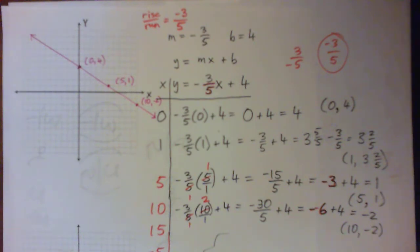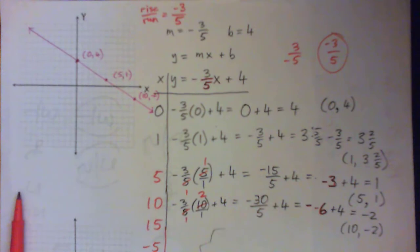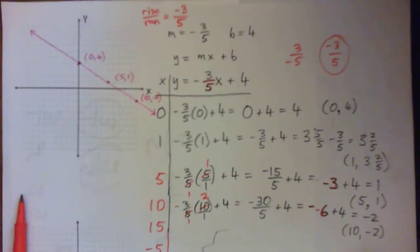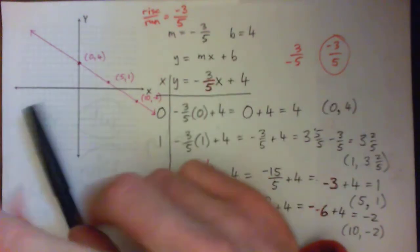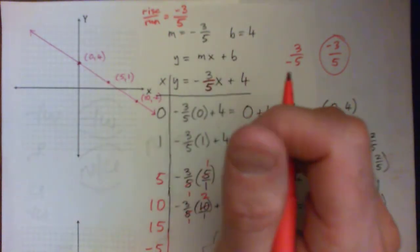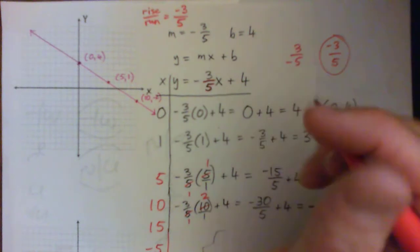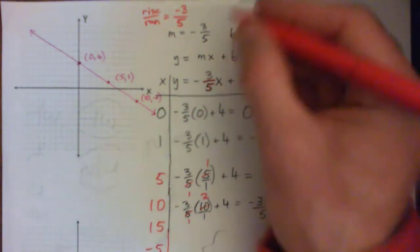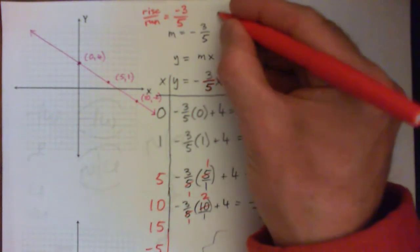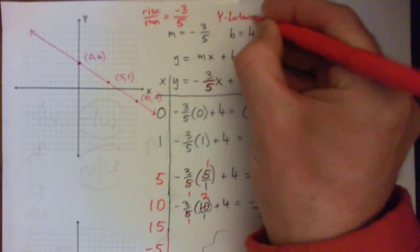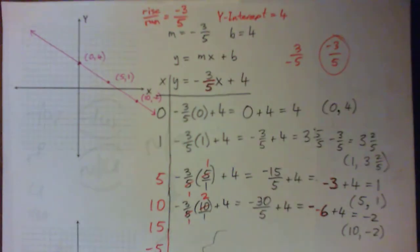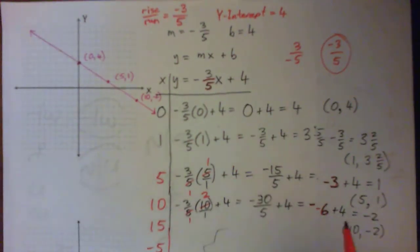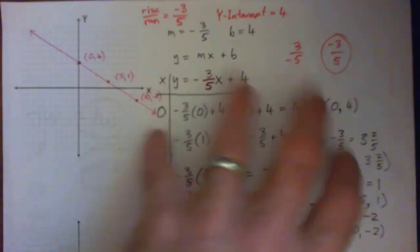What would our run be and what would our rise be? The run, you would come over 5. And the rise, you would come down to -3, down 3. Beautiful. And the Y intercept, the b, is 4.